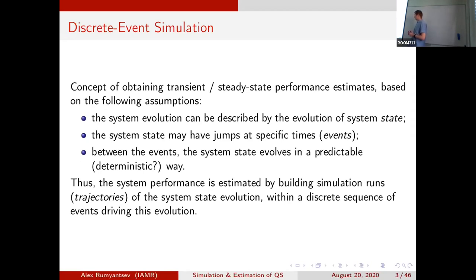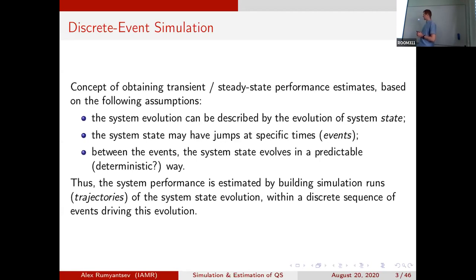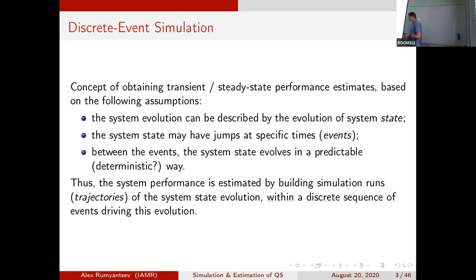Instead of studying the system in continuous time, we consider only the event epochs and at those points we observe the system and construct the trajectory. We can reconstruct what is happening in the system between events. But we also want to prove that if we do it this way, then the numbers we get will converge to the actual quantities we are approximating — for instance, that our estimate of the mean queue size really converges to the true mean queue size.